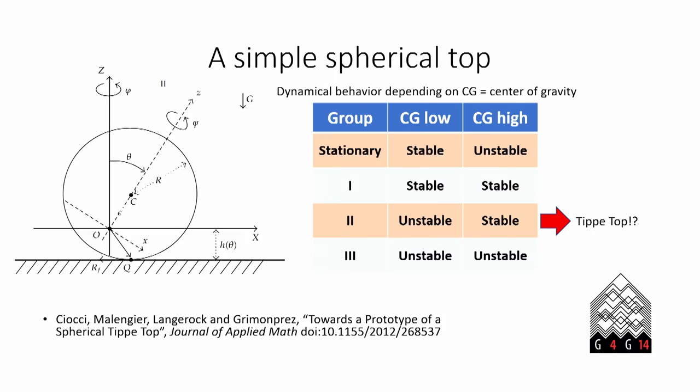But you may not know that in the past 15 years an explanation has emerged from the dynamical systems community. This paper I mentioned on the bottom came out in 2012. It's the main one that I have looked at, and the figure there is from that. Basically they had a huge simplification where they considered a sphere instead of the complicated shape of the tippy top.